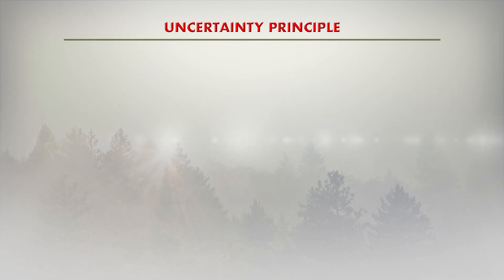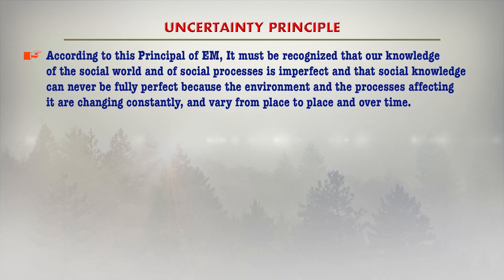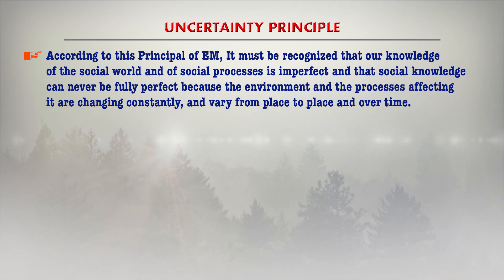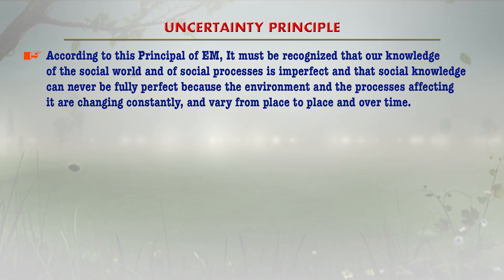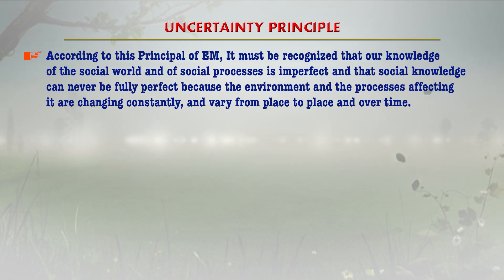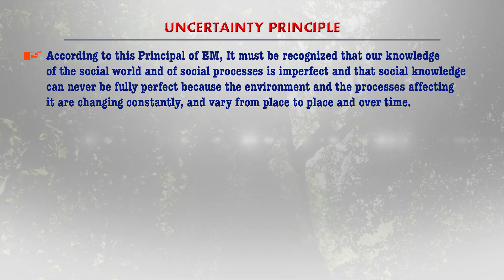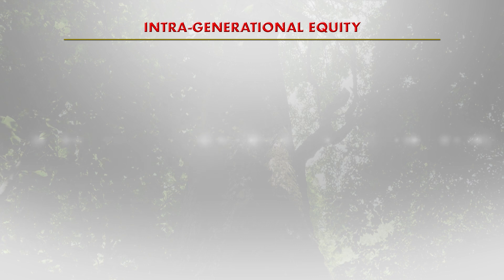The precautionary principle was first adopted by the United Nations Conference on Environment and Development, also known as the Earth Summit, held in 1992. It means that during the threat of serious or irreversible damage to the environment, lack of scientific certainty should not be used as a reason to postpone cost-effective measures to prevent environmental degradation. The second is the uncertainty principle. According to this principle of environmental management, it must be recognized that our knowledge of social work and societal processes is imperfect — the environment and various processes constantly change and vary from place to place and over time.